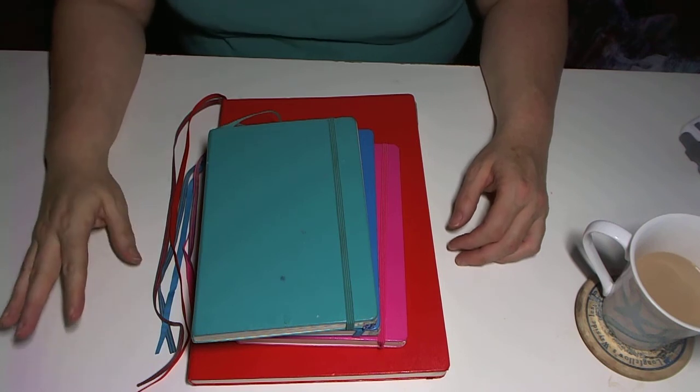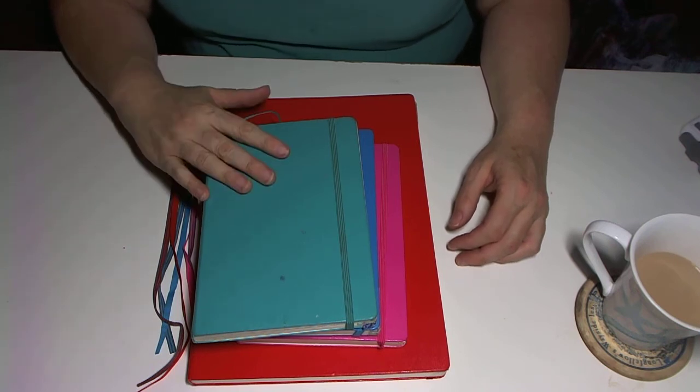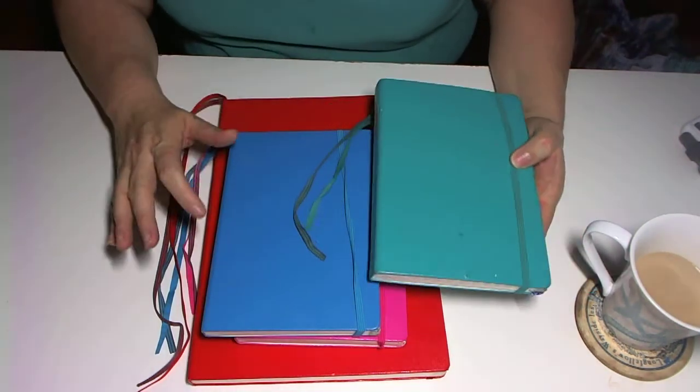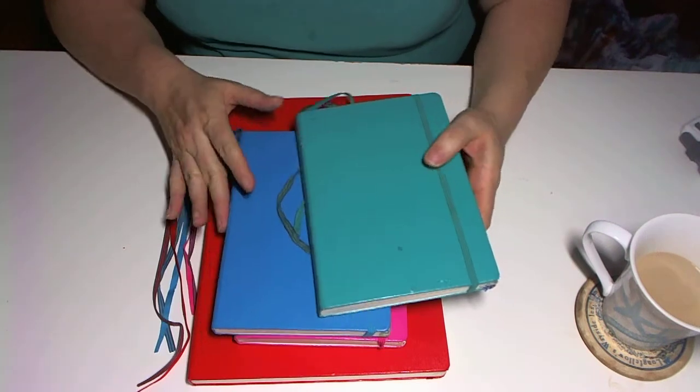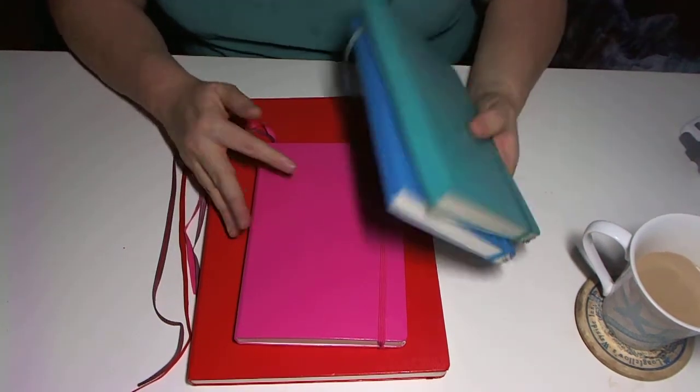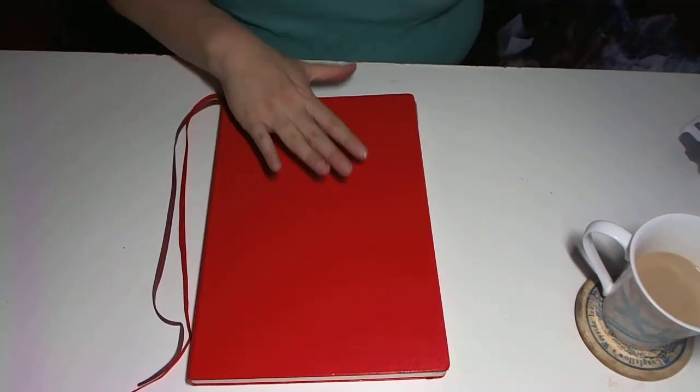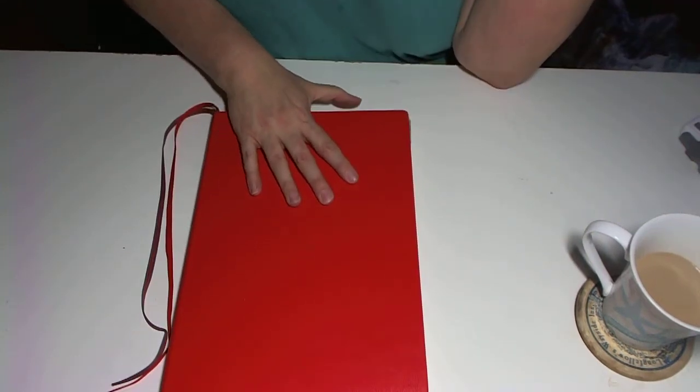Currently I have four bullet journals. This one I just finished. This one is for a long-range plan that I'm working on. This is my new one, and then this big bad boy is for my business related stuff.